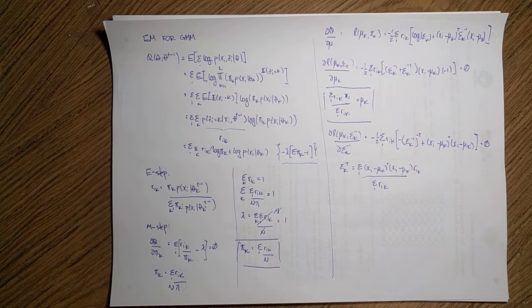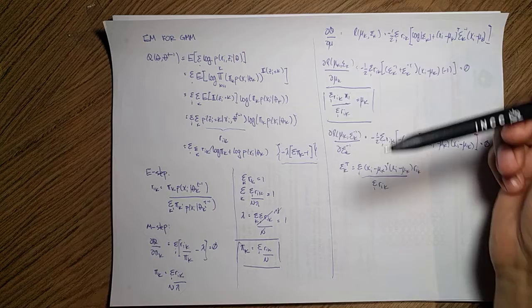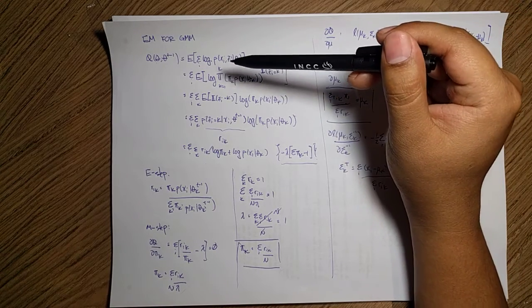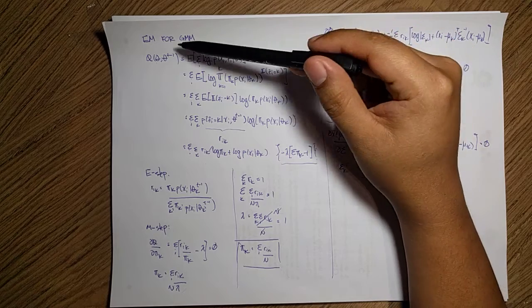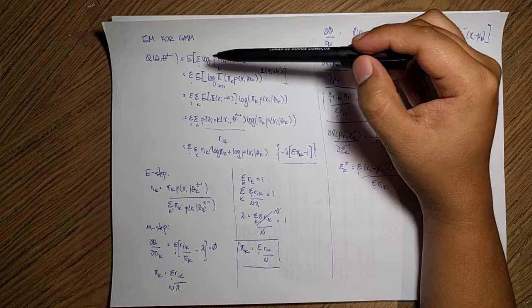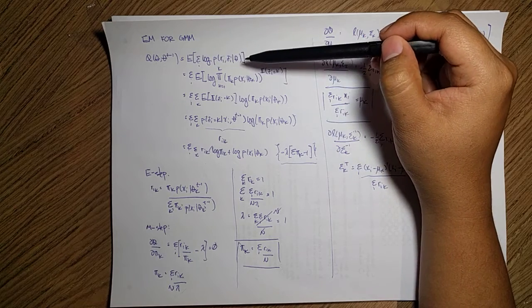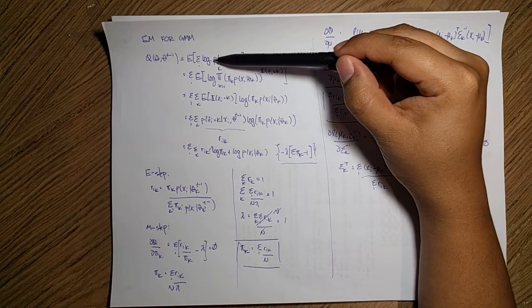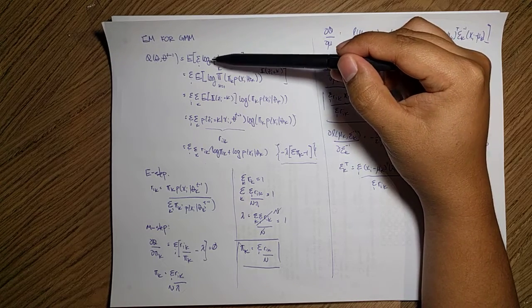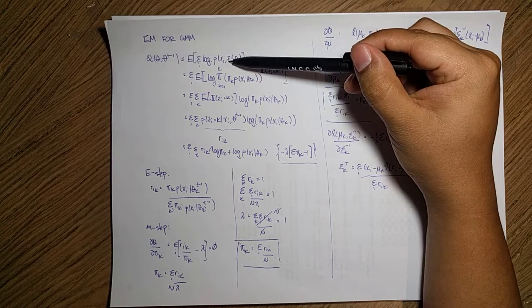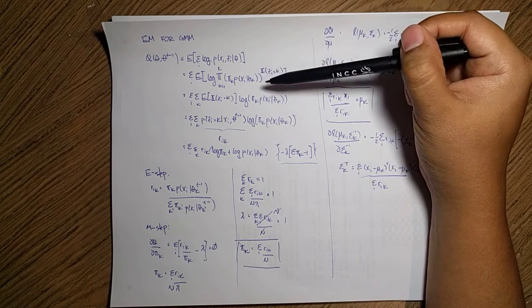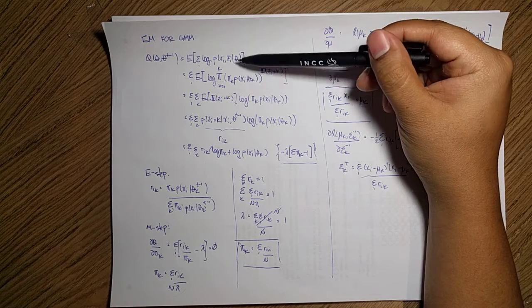We're going to compute the expectation maximization for a mixture of Gaussians. We need to lay out our auxiliary function that depends on theta and theta_{t-1}, which is just the expectation of the completed likelihood. We assume the model is already complete, meaning x_i and c_i are paired, so we just write down this form.